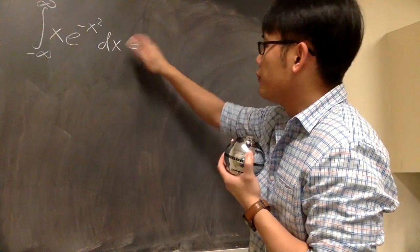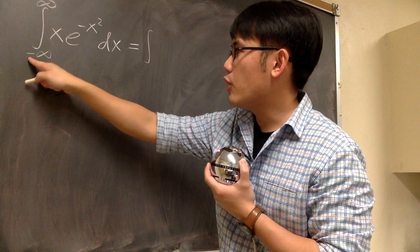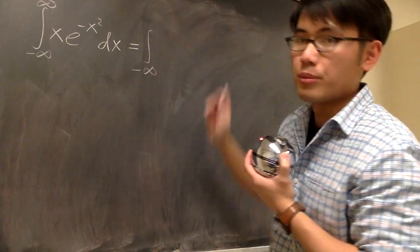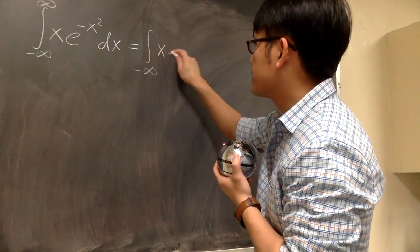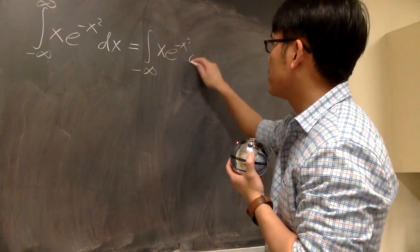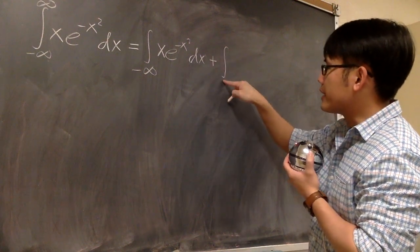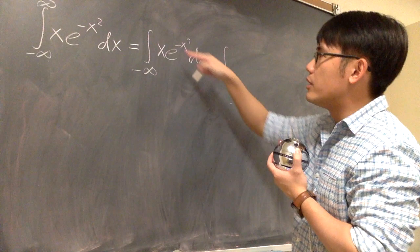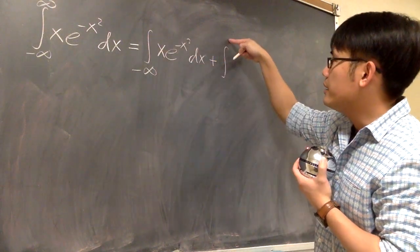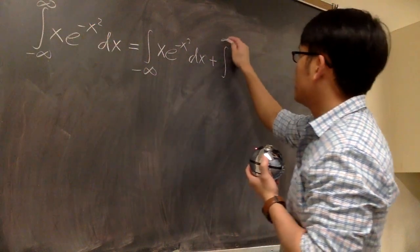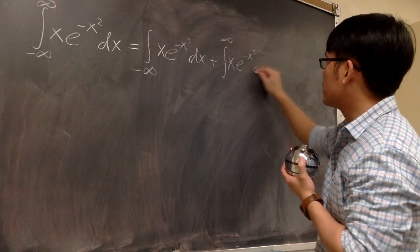So here is what we can do. For the first integral, I will start with negative infinity and end at some finite number. The inside stays the same: x times e to the negative x squared dx. Then we combine with the second integral, where the starting number is the same as that chosen number, and the upper limit is positive infinity. The inside is again x times e to the negative x squared dx.